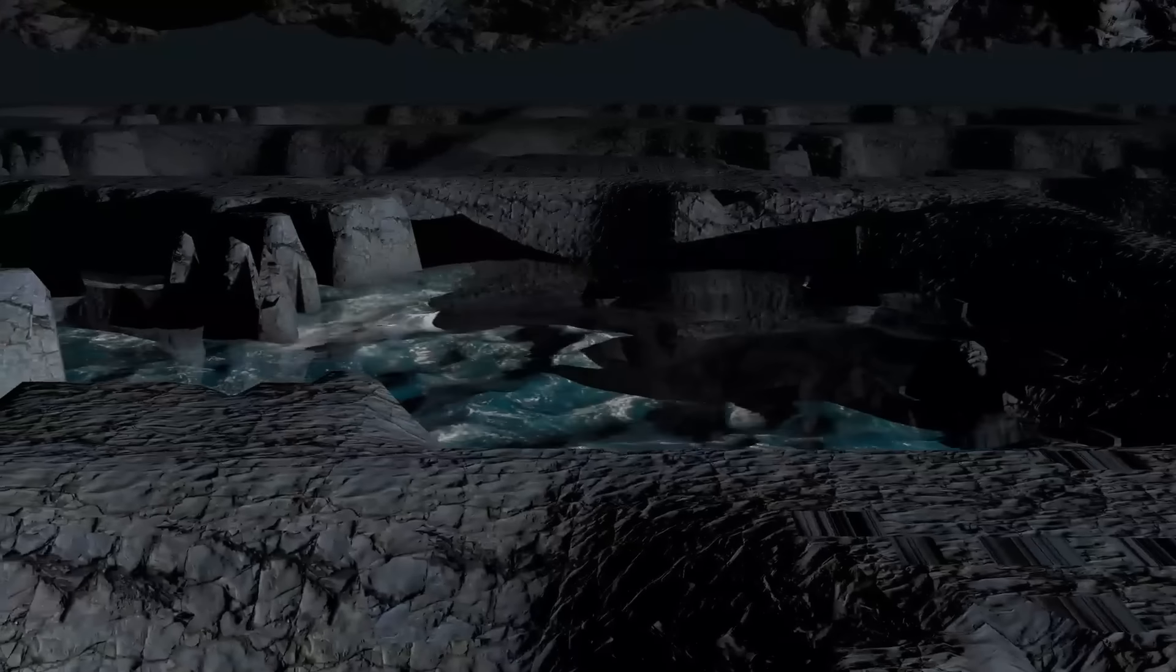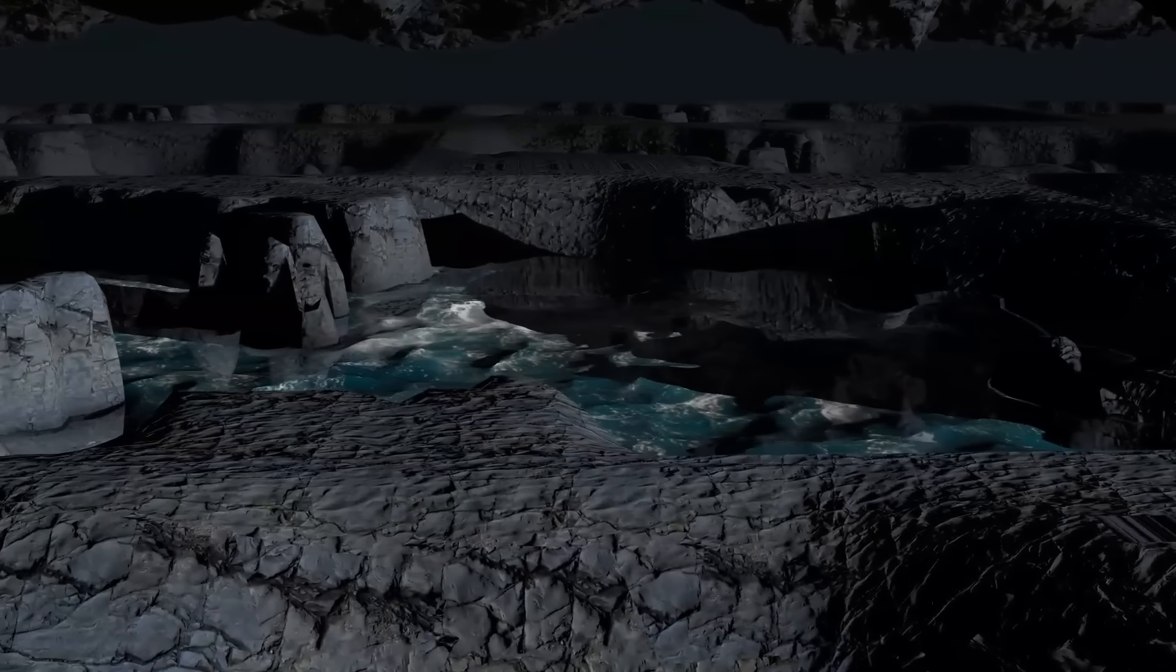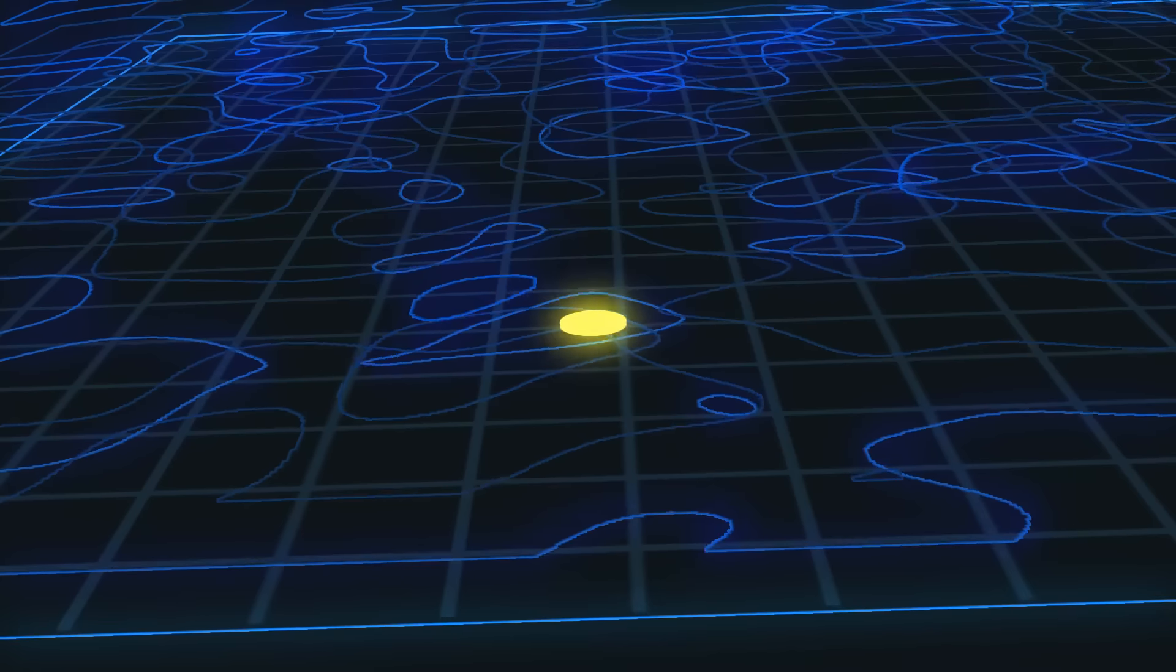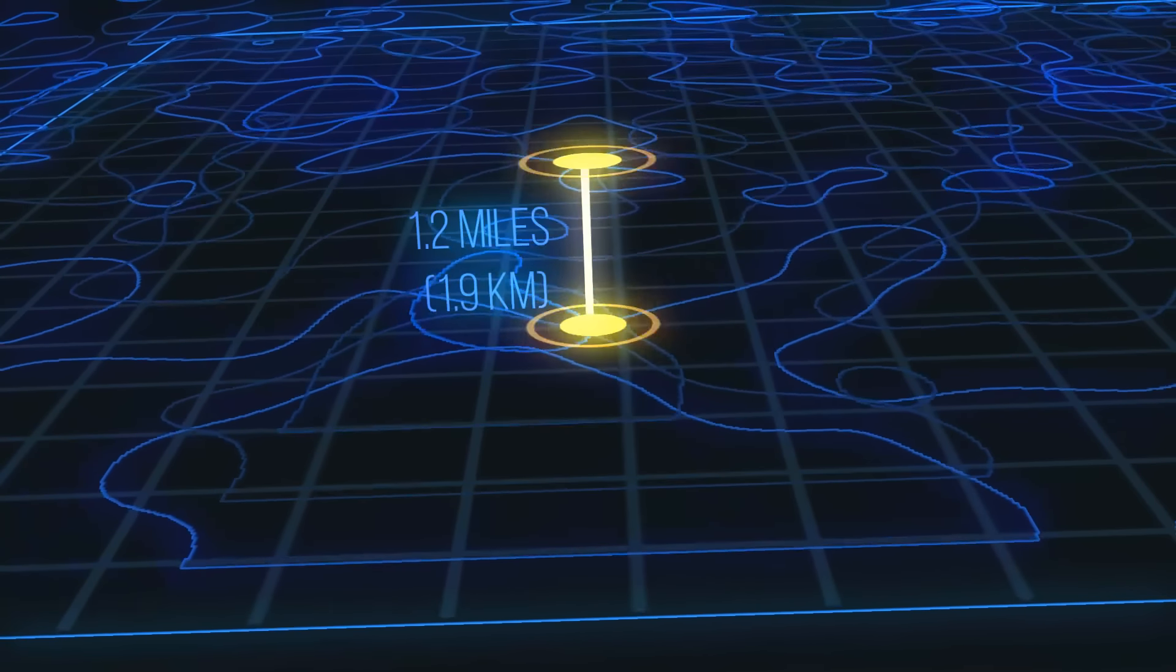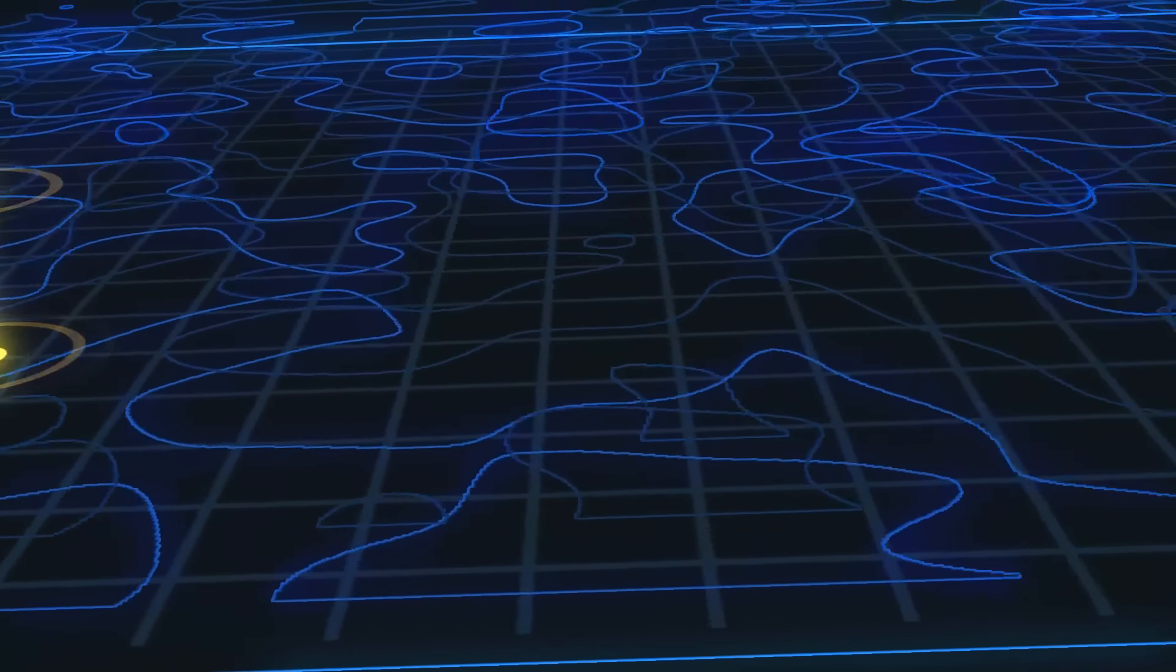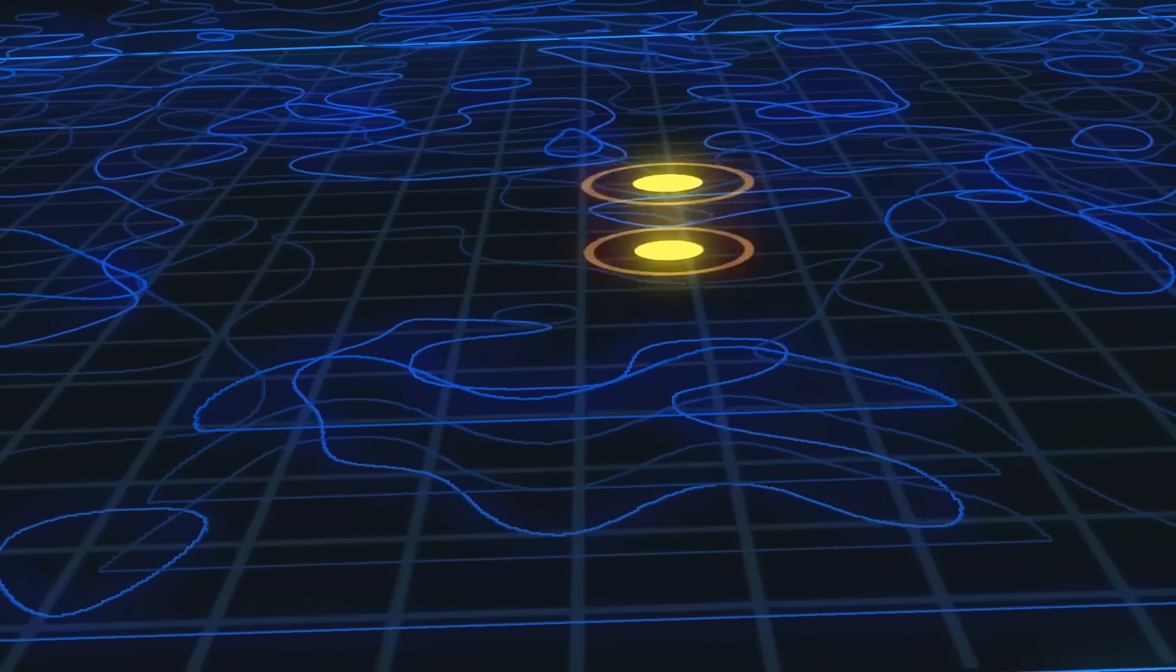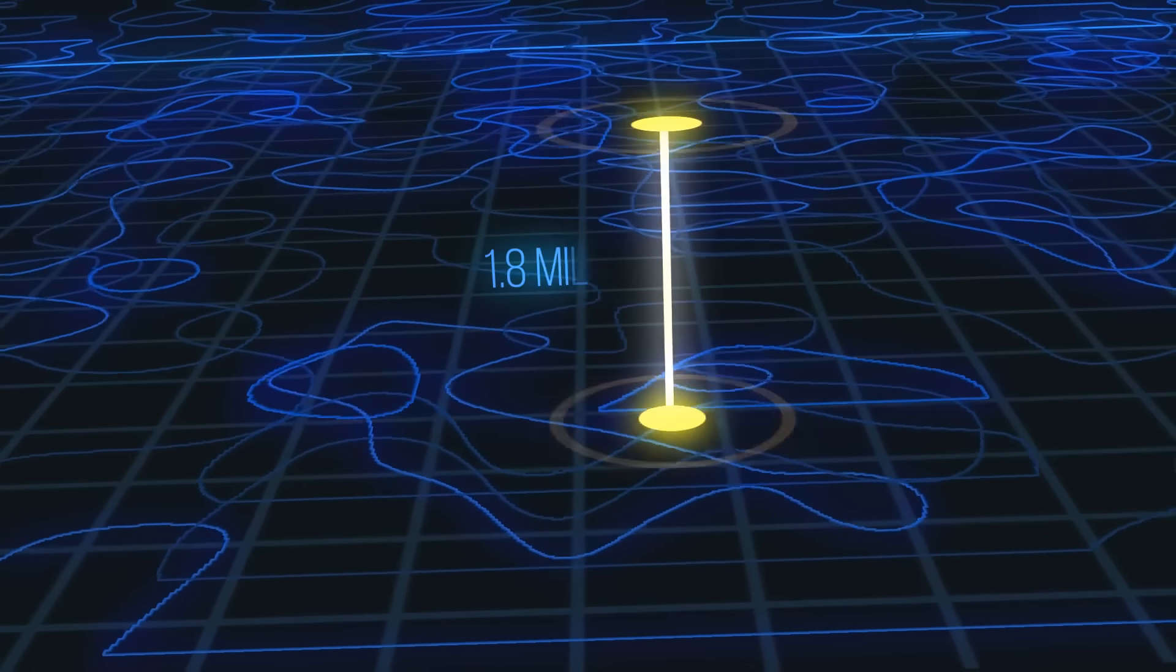But how is it possible that these lakes exist in the first place? The average thickness of most Antarctica ice is approximately 1.2 miles. However, it can get over 1.8 miles thick in some places, especially during the winter.